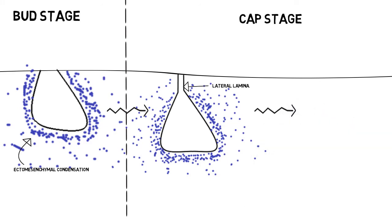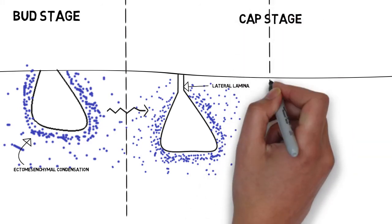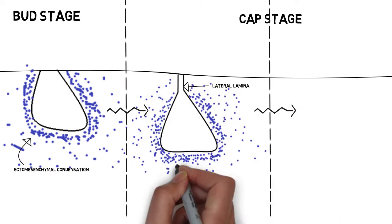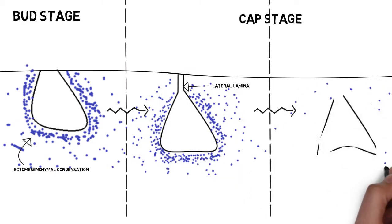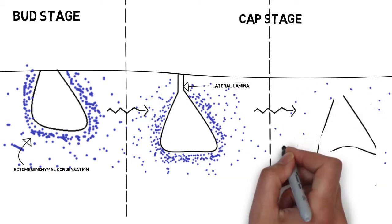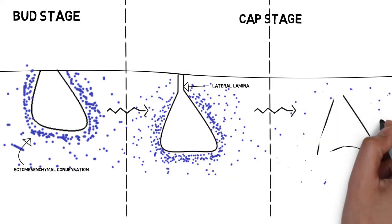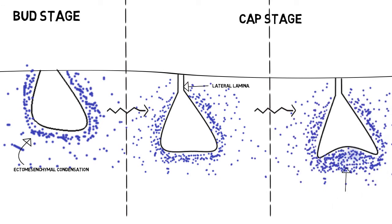As we move forward in the cap stage, the tooth bud begins to resemble some sort of a cap resting on a ball of ectomesenchyme. Therefore we call this stage the cap stage, since the tooth bud is now in the form of a cap. The cap is resting on a ball of cells — ectomesenchyme cells.